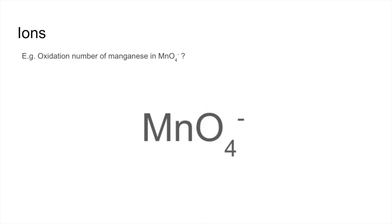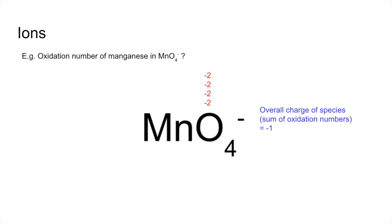Example two: what is the oxidation number of manganese in MnO₄⁻? Step one — assign known oxidation numbers: four oxygens give four × (−2) = −8. Step two — the overall charge is minus one. So manganese must be plus seven, since −8 + 7 = −1.